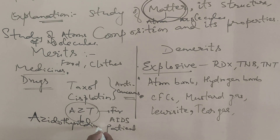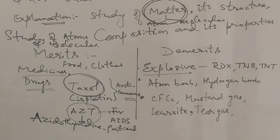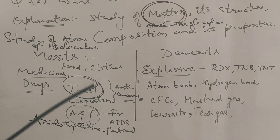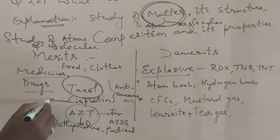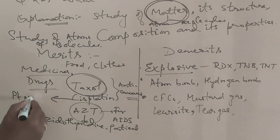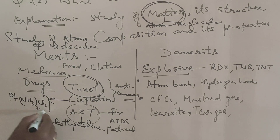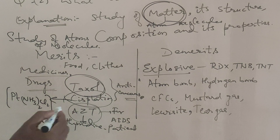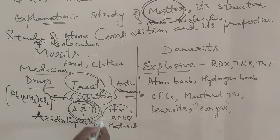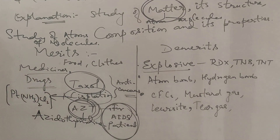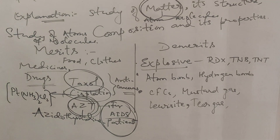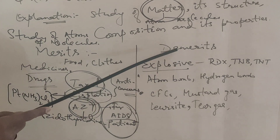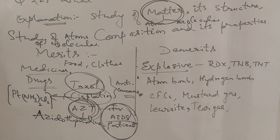Taxol is obtained from the Taxus plant; it is an anti-cancerous drug. Cisplatin is a complex compound of platinum with the formula Pt(NH3)2Cl2, called diaminedichloroplatinum(II) — also an anti-cancerous drug. AZT (azidothymidine) is used by AIDS patients; AIDS is caused by the HIV virus.